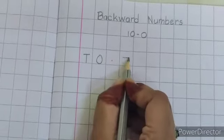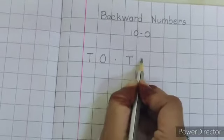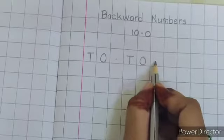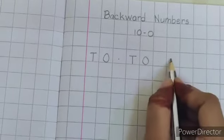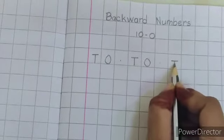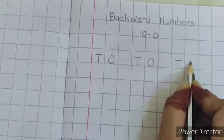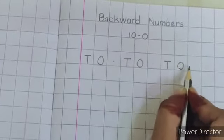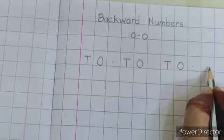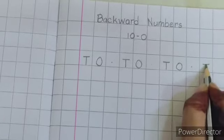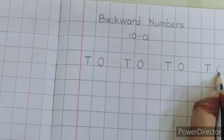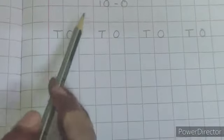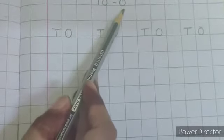Put a dot, T, O, small dot, T, O, dot, T, O. Now let's start writing backward numbers from 10 to 0.